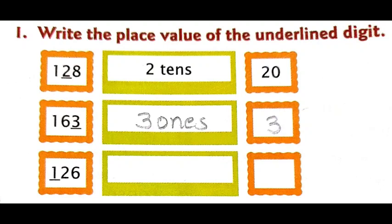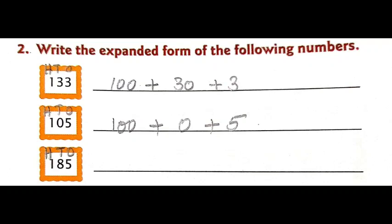Similarly, you do the third sum. Now the second question we have is: write the expanded form of the following numbers. What is the first number given? It is 133. For 133, first write the place values. Always write the place values from right to left — ones, tens and hundreds.